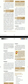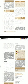Troposphere is the lowest layer of the atmosphere. In Greek, 'tropos' means turn or change. This layer extends up to 8 kilometers at the poles and up to 18 kilometers at the equator. The temperature decreases with increasing height in this layer.